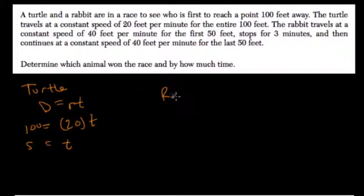The rabbit travels at a constant speed of 40 for the first 50 feet, stops for 3 minutes, and then continues at a speed of 40 feet per minute for the last 50 feet. Determine which animal won the race and by how much time.